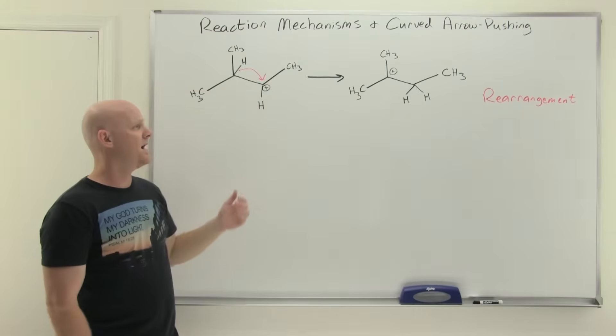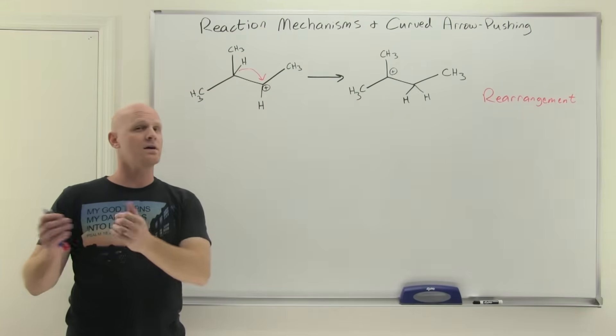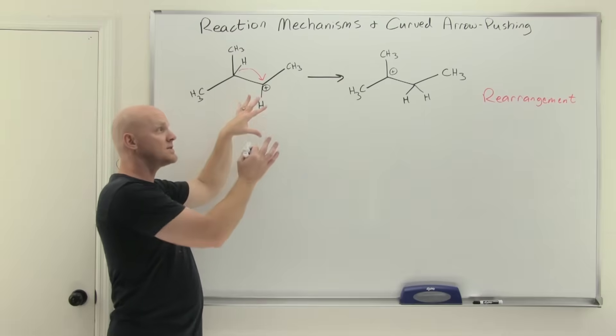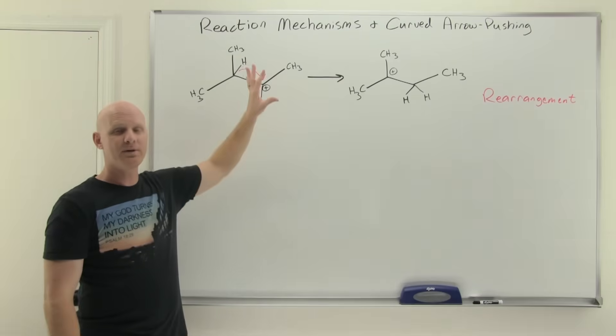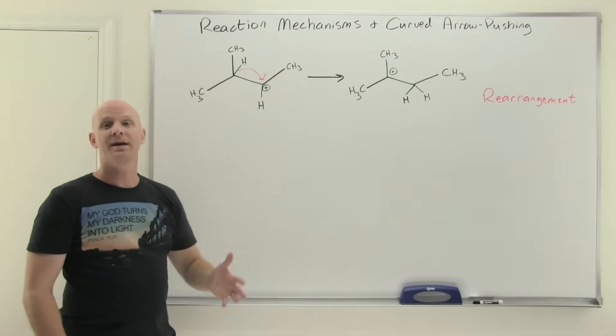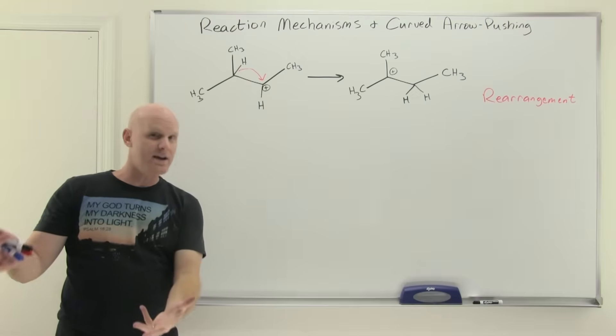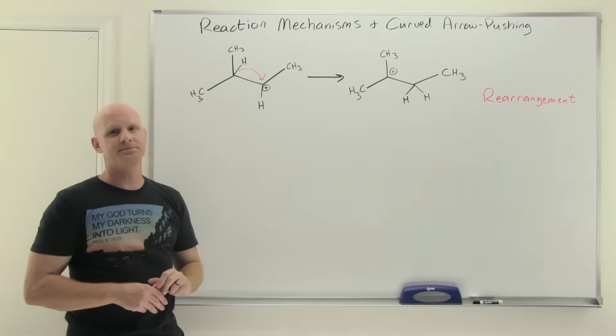We've now covered all four common mechanistic steps: nucleophilic attack, loss of a leaving group, Bronsted acid-base reactions (proton transfer), and rearrangement — with carbocation rearrangement being the most common. In the next chapter, we'll go into carbocation rearrangements in more detail, including how to predict when they happen.